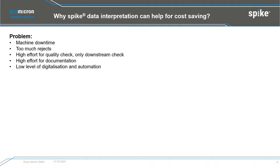With this slide, I want to discuss why data interpretation can help with cost-saving. In production, suppliers and manufacturers need to address these problems: machine downtime, too many rejects, high effort for quality checks — mainly done downstream after production — high documentation effort, and the fact that we are still in the early stages of digitalization and automation, Industry 4.0.